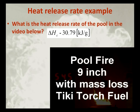So let's do an example. What is the heat release rate of the pool in the video below? If we assume that the heat of combustion is 30.79 kilojoules per gram, we'll need to change the unit to that, then we'll actually work out the problem.